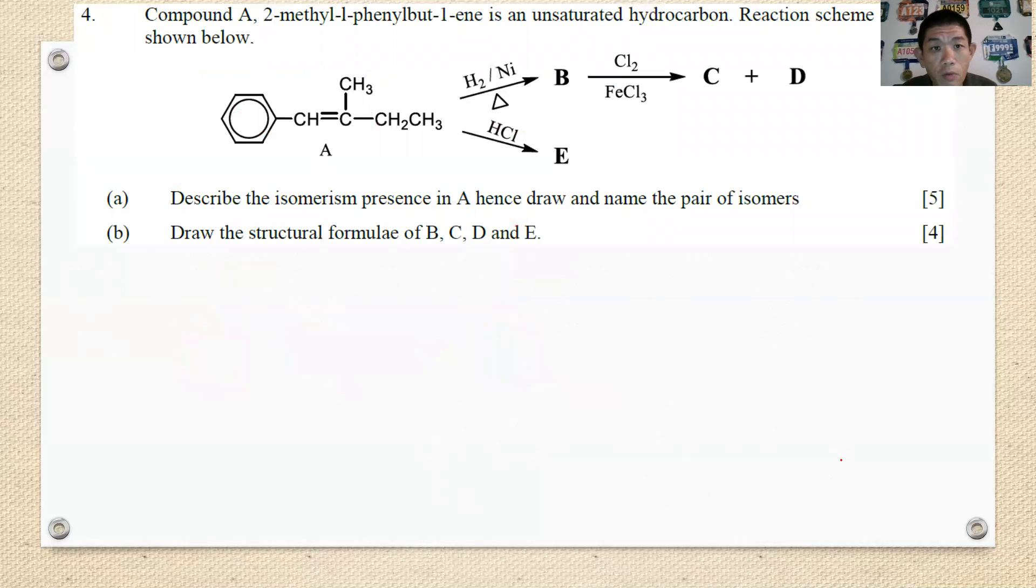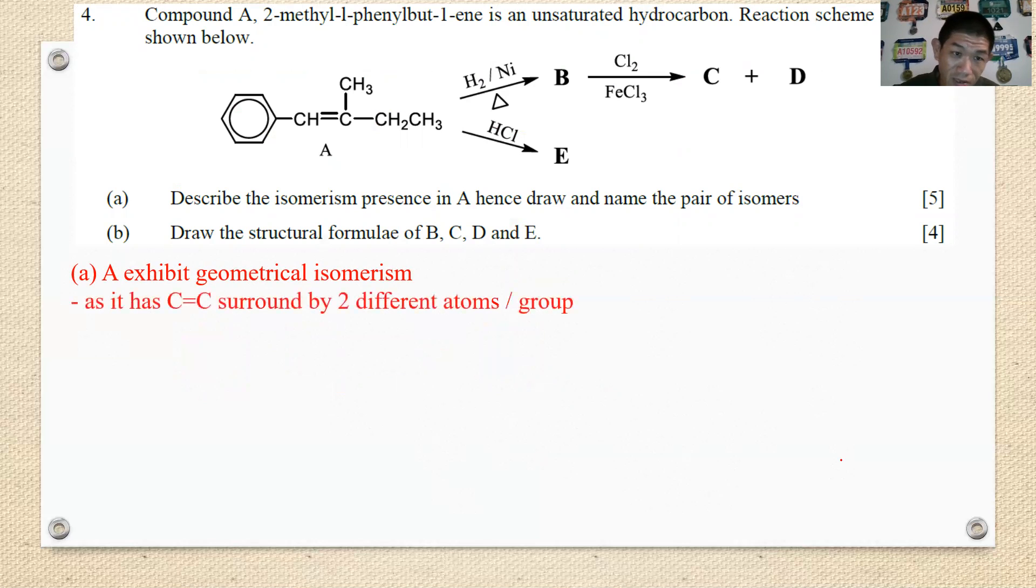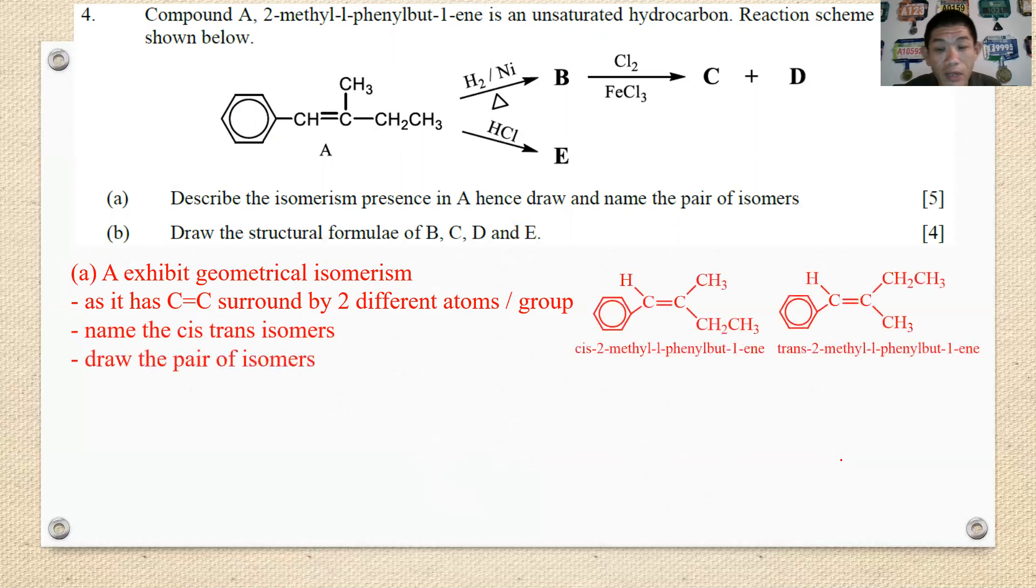Finally we go to question number four. Compound A 2-methyl-1-phenyl-1-ene is an unsaturated hydrocarbon. Reaction scheme A is shown below. Describe the isomerism presence in A, hence draw and name the pair of the isomerism. In A it is obviously that you have what we so call as a cis-trans isomerism or geometrical isomerism. You must mention that A exhibited geometrical isomerism as it has a C double bond C surrounded by two different atoms or group of atoms. Then you have to name the cis-trans isomer and draw the isomer pair. This will all be together five marks.